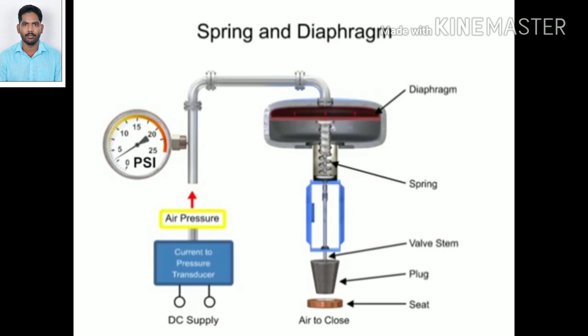For example, a pressure of 9 PSI applied to the diaphragm moves the spring and valve stem to 50% of operating range.